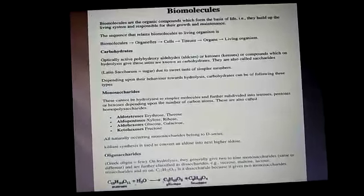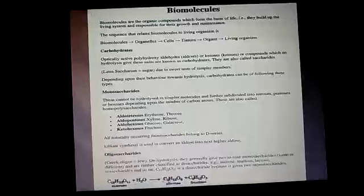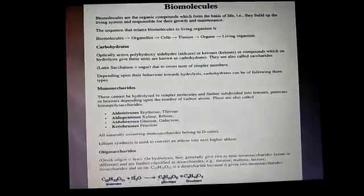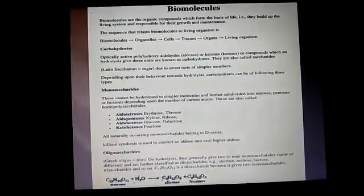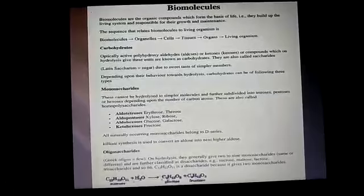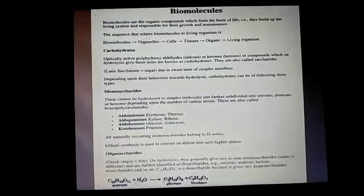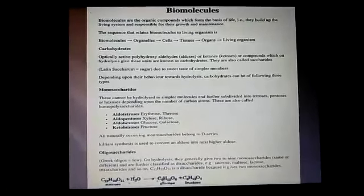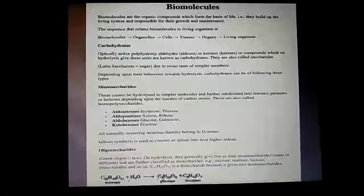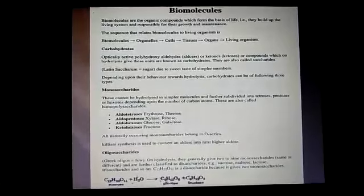Aldose monosaccharides contain an aldehyde group, while ketose monosaccharides contain a keto group. On the basis of the number of carbon atoms present in the chain along with the aldehyde or ketone group, they are further named as: aldotriose (3 carbon atoms, aldehyde), aldotetrose (4 carbon atoms), aldopentose (5 carbon atoms), and aldohexose (6 carbon atoms, aldehyde group).